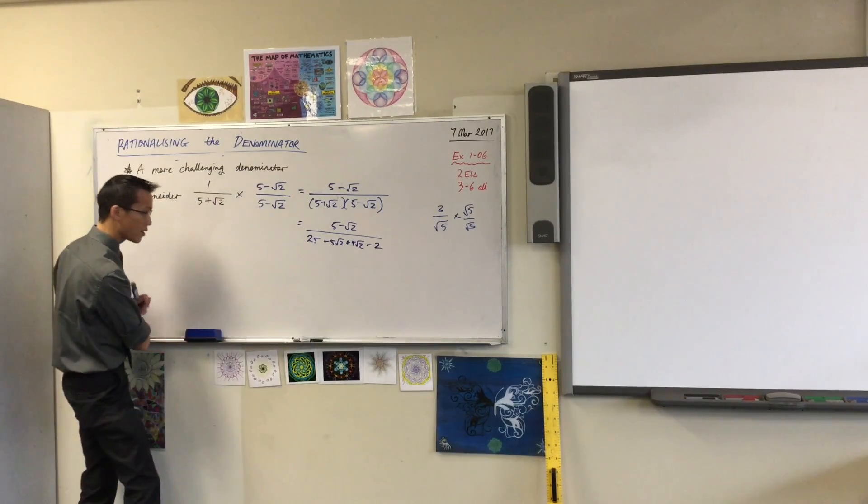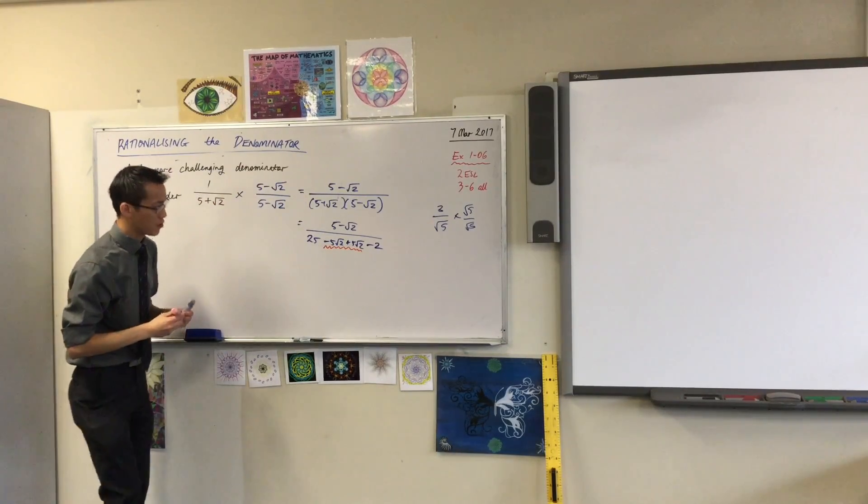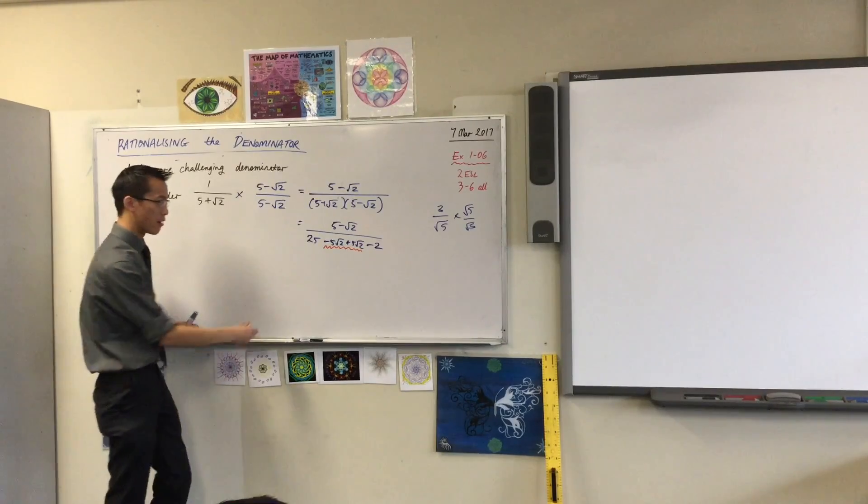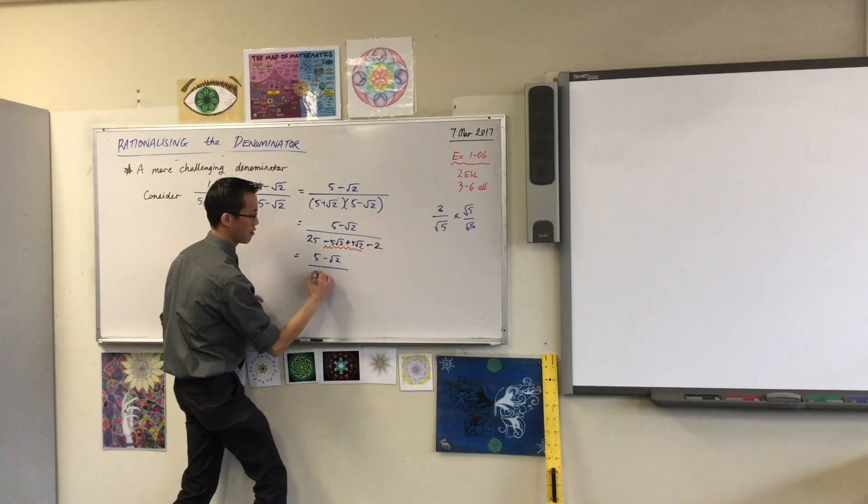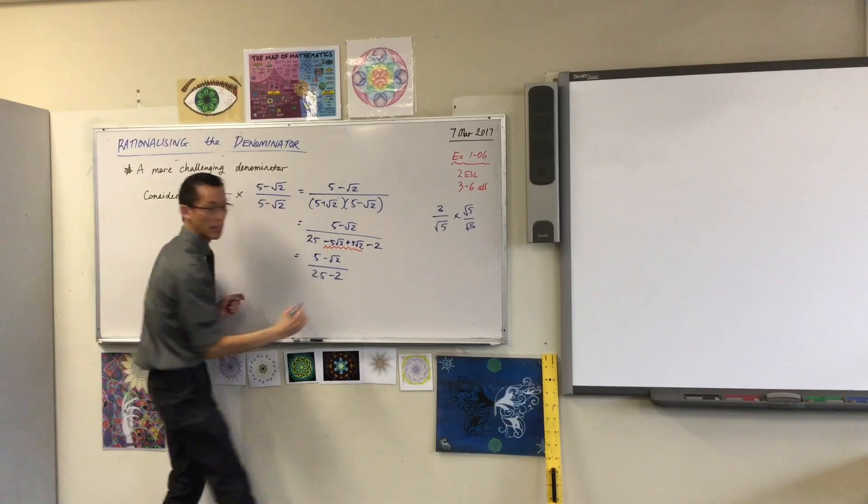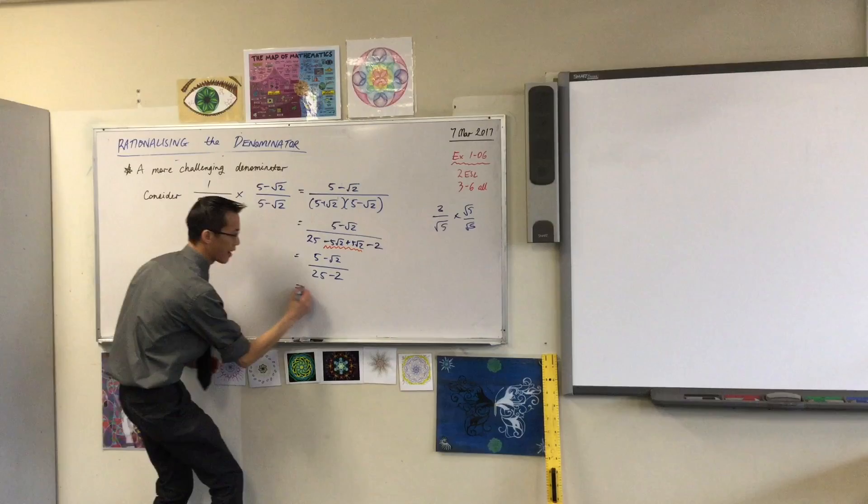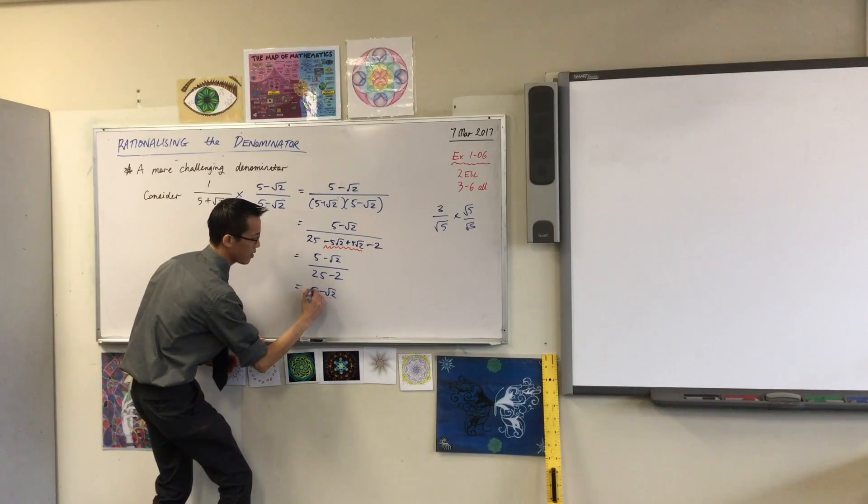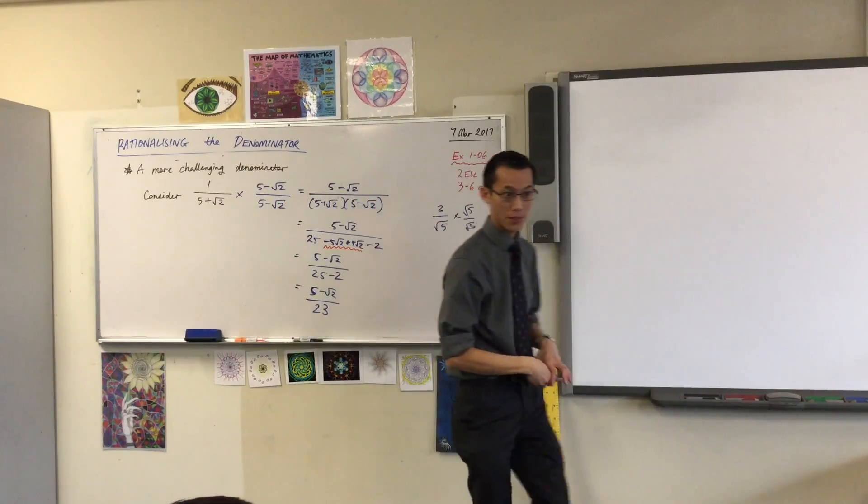Now, do you notice what's happened right here in the middle? See that? Those two guys are just going to cancel out. Like so. Is that okay? They've just exactly annihilated each other. And I can just say, hey, 25 and 2 are both rational. And I'm done. So this is kind of neat.